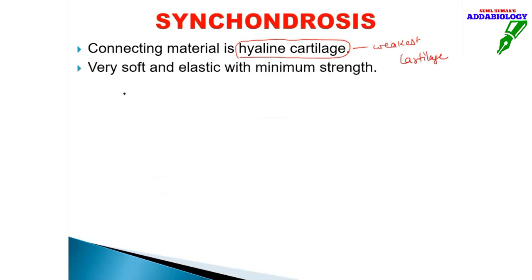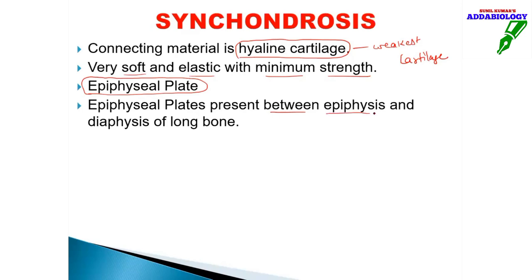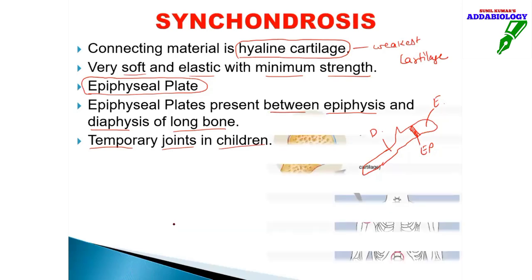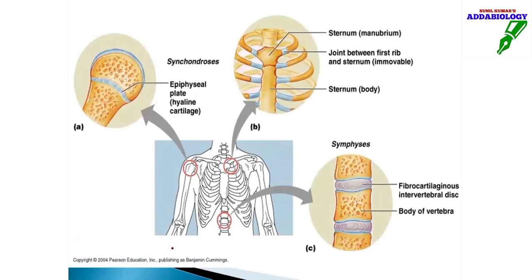The connecting material in synchondrosis is hyaline cartilage — the weakest cartilage, which is very soft, elastic, and has minimum strength. There is a plate seen called the epiphyseal plate. This plate is present between the epiphysis and diaphysis of long bones. The area above is the epiphysis and the area below is the diaphysis. The blue line in the diagram represents the epiphyseal plate.